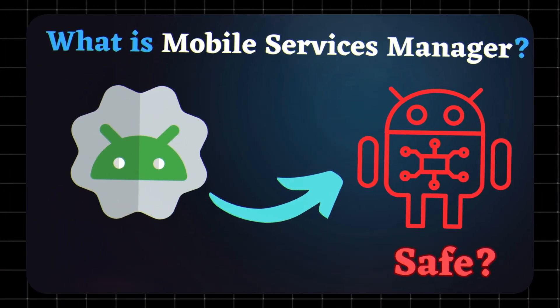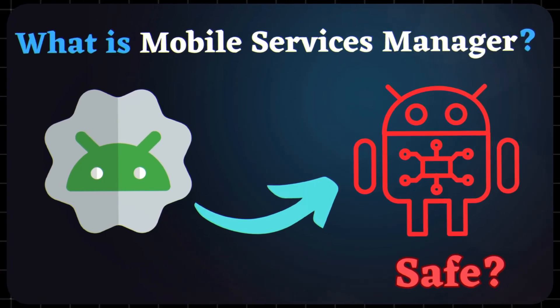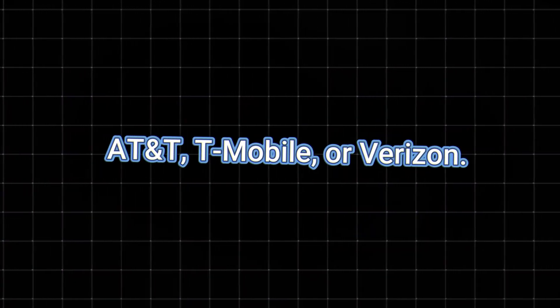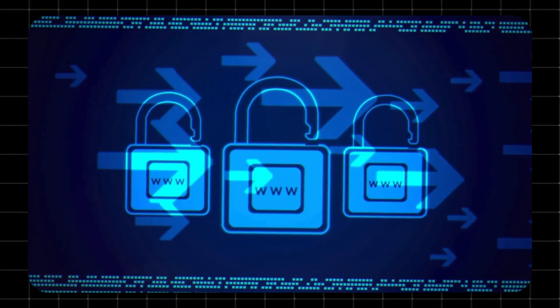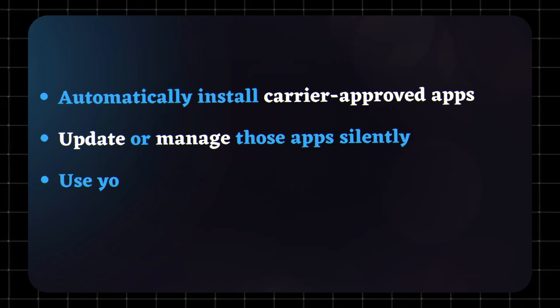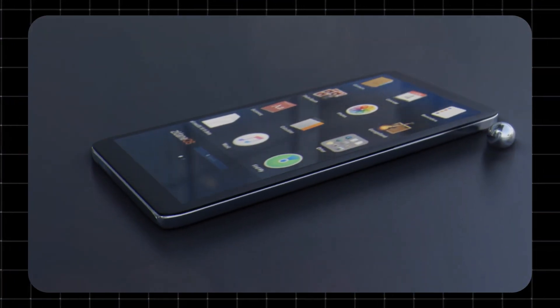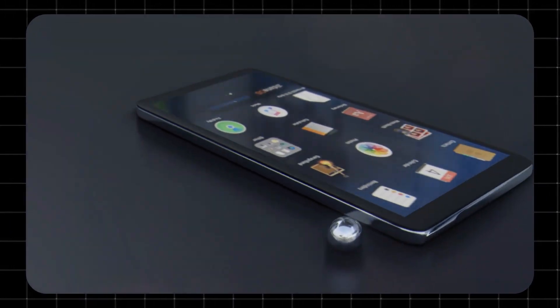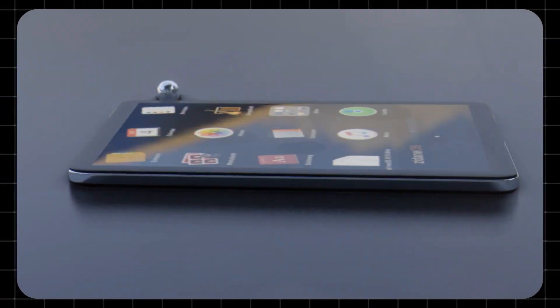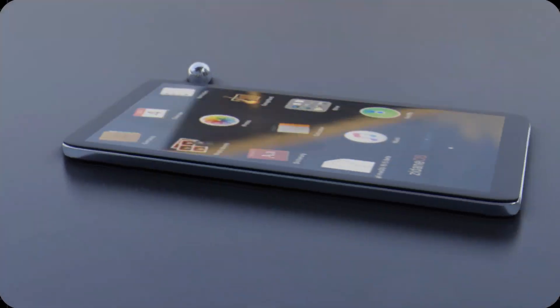What is Mobile Services Manager? It's a pre-installed app mostly found on Android phones from certain carriers like AT&T, T-Mobile, or Verizon. It runs in the background and can automatically install carrier-approved apps, update or manage those apps, and silently use your mobile data without notification. It's powered by something called DT Ignite, and while it's meant to help carriers offer apps and updates, it often ends up cluttering your phone or draining your data.